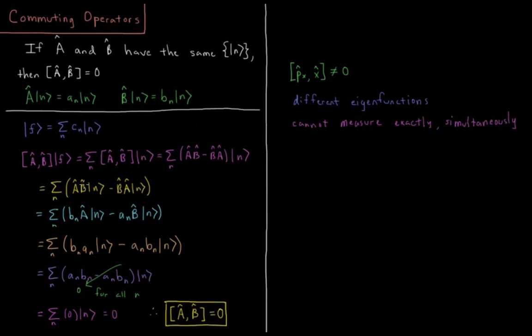So the innermost operator acts first, so we have B act on N, which gives us little bN N, so we can factor that out. Now we have bN, A, N. Over here, A is acting first, so A acting on N gives little aN N. Factor out little aN N, now you have aN N, bN N.